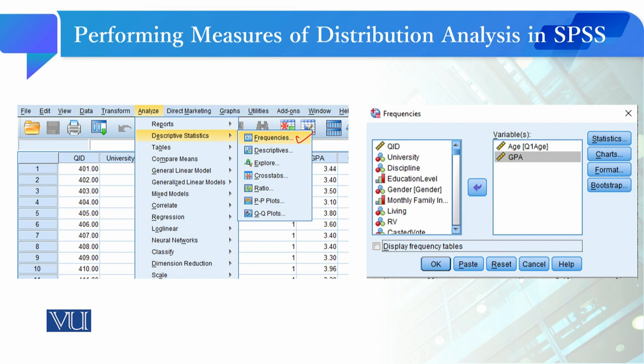You have to remember that if you want to compute skewness and kurtosis, you need a continuous variable. You cannot compute this for nominal level or ordinal level variables. You can only choose continuous variables for this.